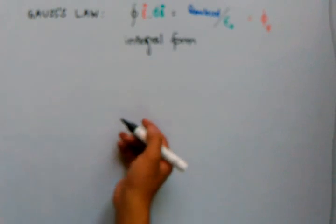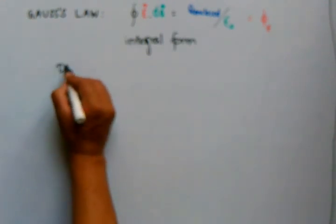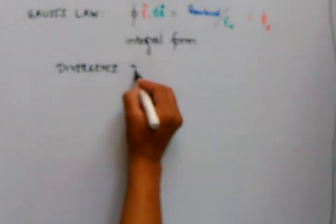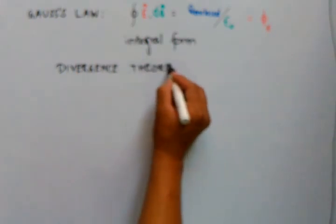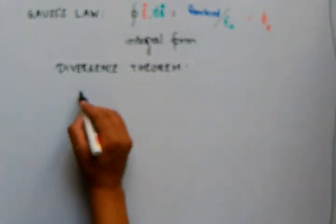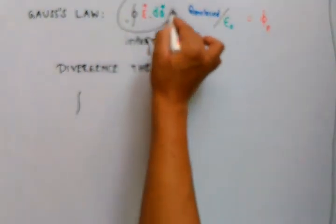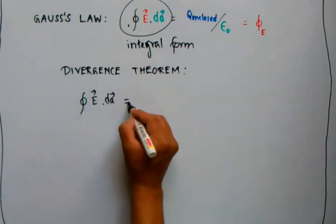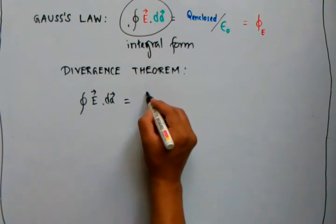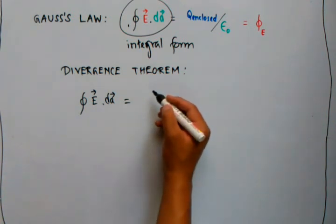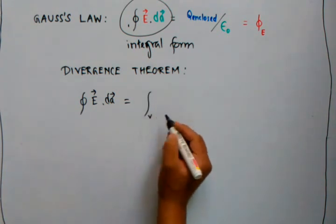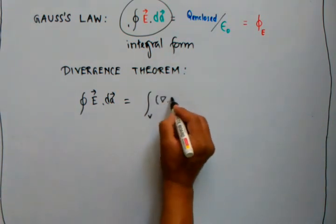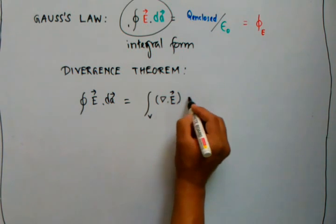I hope you are aware of the divergence theorem. Using it, you can write this as: we integrate over all space. This is the divergence of the electric field, and this is the volume element.